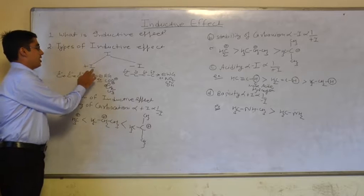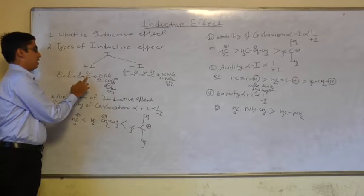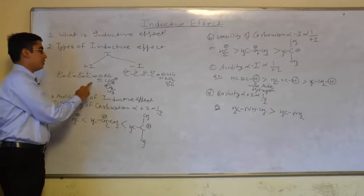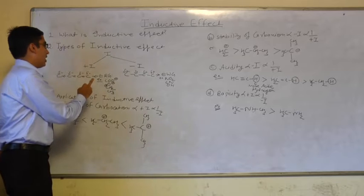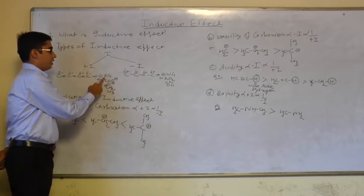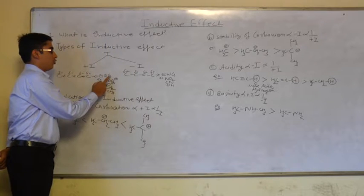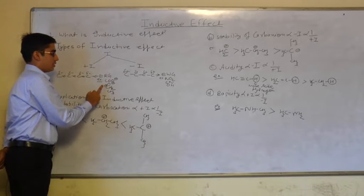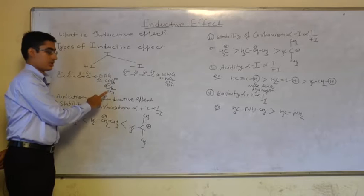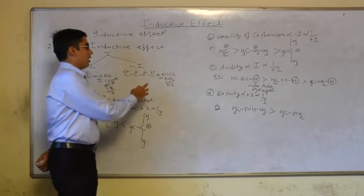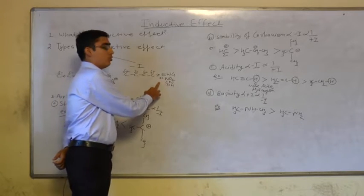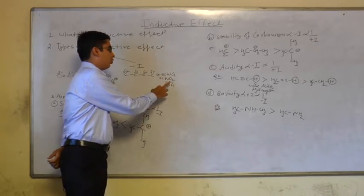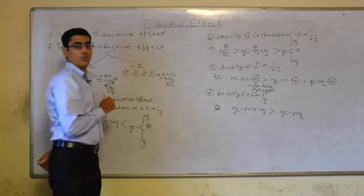In plus I effect, the electron density increases in the carbon chain, and examples of electron releasing groups are CN minus, O minus, CH2 minus, and methyl. Examples of electron withdrawing groups are NO2, CN, and OH.